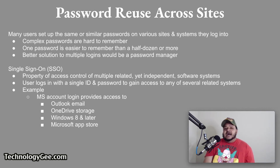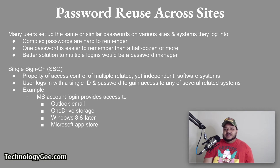Single sign-on, also known as SSO, is a property of access control of multiple related yet independent software systems. With SSO, a user logs in with a single ID and password to gain access to any of several related systems. For example, a single Microsoft account login provides access to Outlook email, OneDrive storage, Windows 8 and later, and the Microsoft app store.